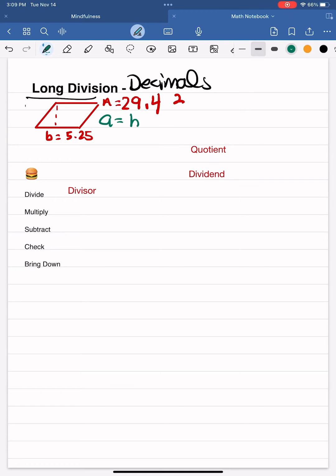Hey guys, let's go ahead and do some long division with decimals. When I'm trying to find the missing side length of a parallelogram and I'm given the area and the base, I can divide to find the height.